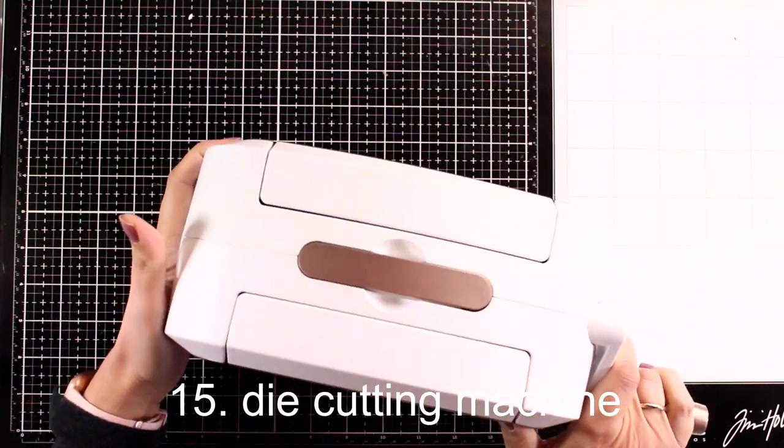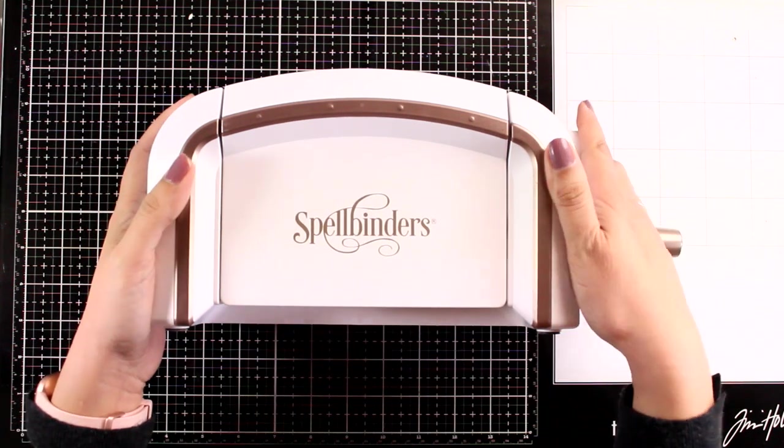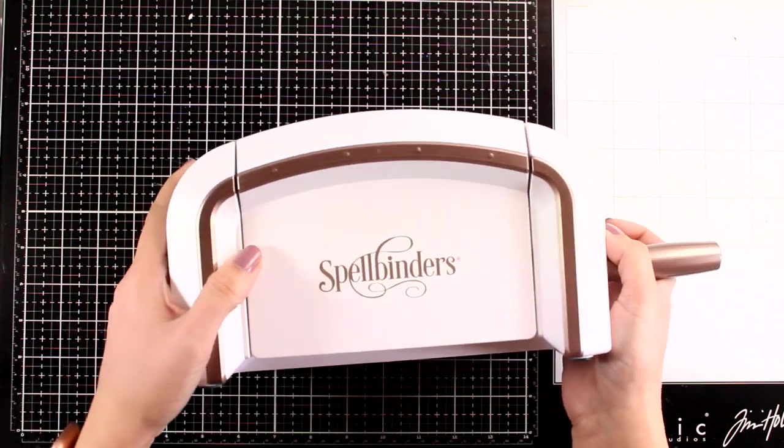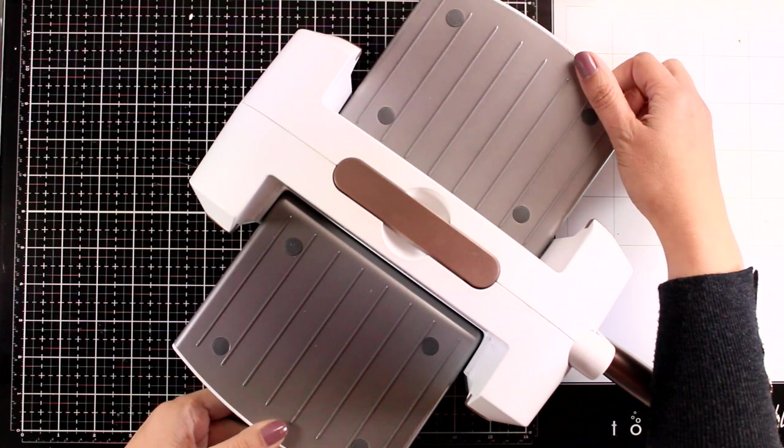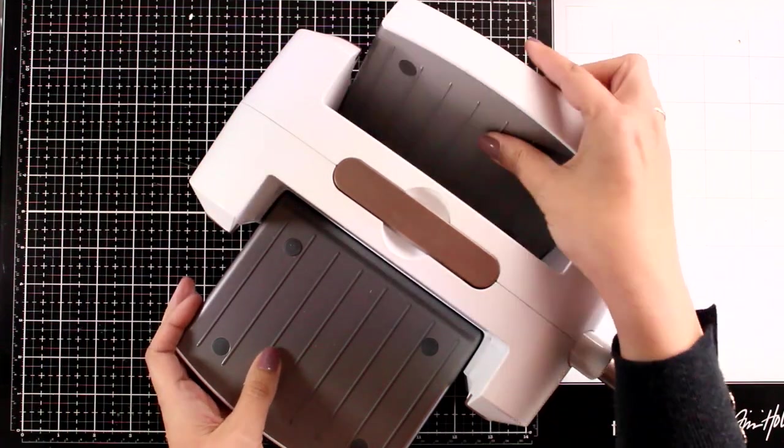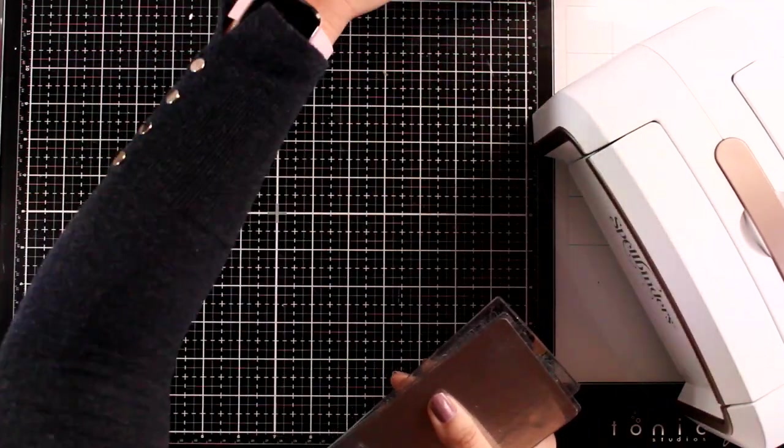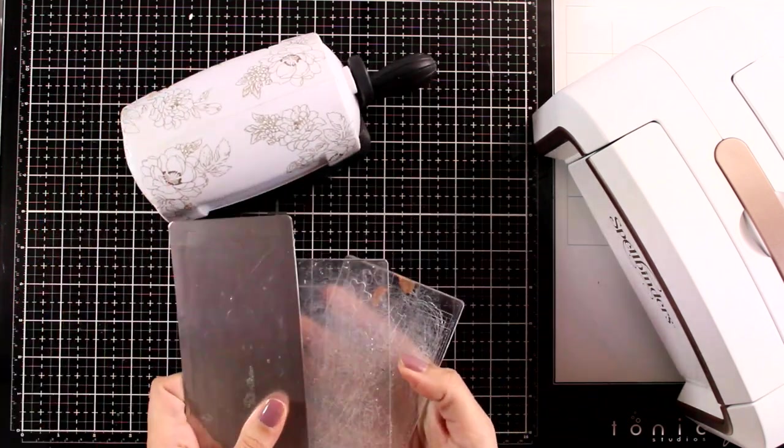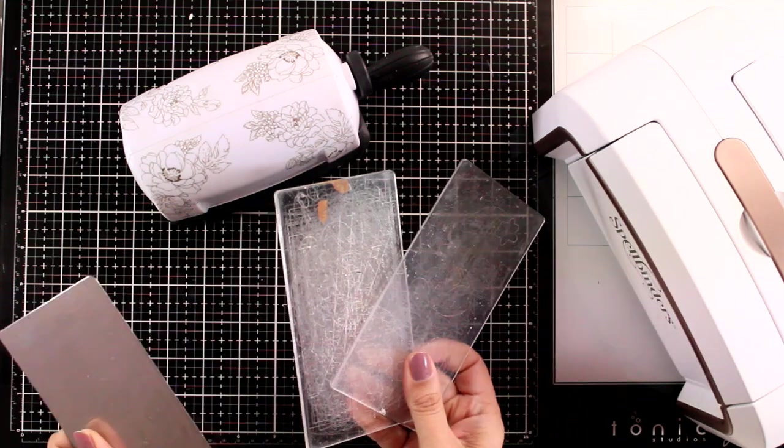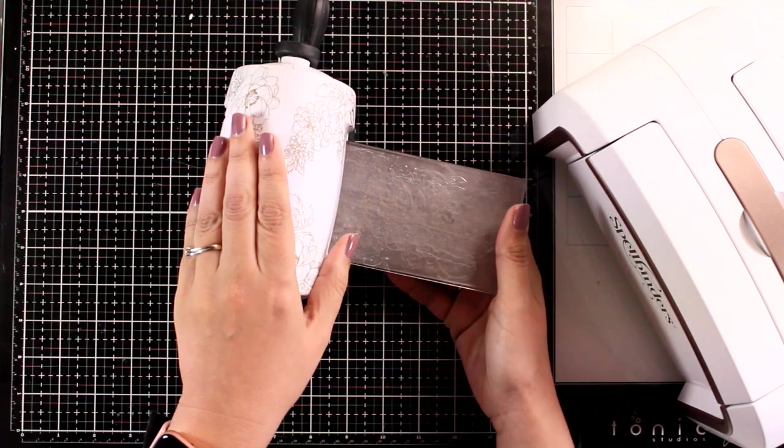If you don't have a die-cutting machine yet, you cannot imagine the fun you'll have once you grab one. I think this is a great gift for Christmas. I love my Spellbinders, and this is a Platinum 6. There are many different ones in the market. You get two tools in one because you'll be able to emboss as well. If you don't want to invest in a big machine, you can grab a smaller one by Altenew. If you do a lot of die-cutting, you can get an electronic one. I personally have a Gemini.